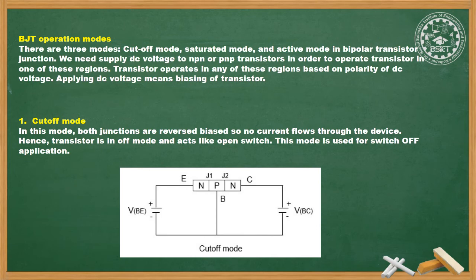The BJT operates with three currents and two biasing supplies. There are three modes in which a BJT can be operated, depending on the biasing conditions: cut-off mode, saturated mode, and active mode. We need to supply DC voltage to NPN or PNP transistors in order to operate the transistor in one of these three regions. The transistor operates in any of these regions based on the polarity of the DC voltage applied — applying DC voltage means biasing the transistor.